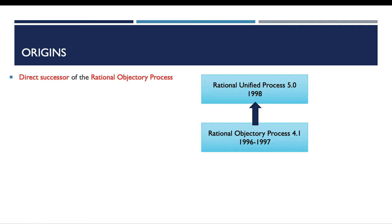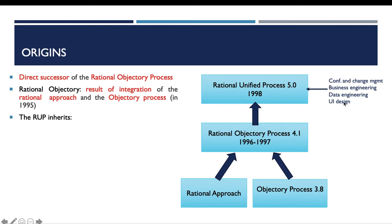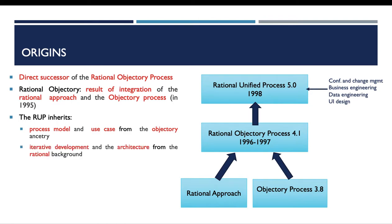The Rational Unified Process is a direct successor of the Rational Objectory Process, which is the result of integration of the rational approach and the Objectory process. Mainly, the Rational Unified Process incorporates configuration and change management, business engineering, data engineering, and UI design. It also inherits process model and use case from the Objectory process, iterative development and architecture from the rational background.